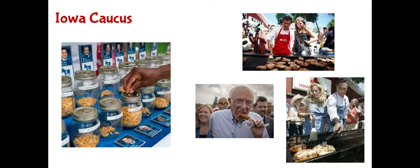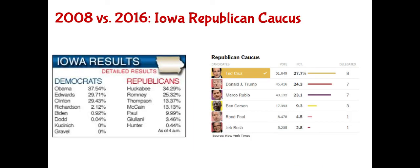Iowa is a more conservative state than the country overall, so the Iowa caucus is a difficult contest for determining who the Republican nominee will be — it's a bit more predictive of the Democratic nominee. Republicans tend to choose someone more conservative than the general Republican population. In 2008 and 2016, individuals who finished first — Mike Huckabee and Ted Cruz — didn't go on to be the party's nominee, because they appealed to a more conservative audience than that year's eventual nominees: John McCain in 2008 and Donald Trump in 2016.